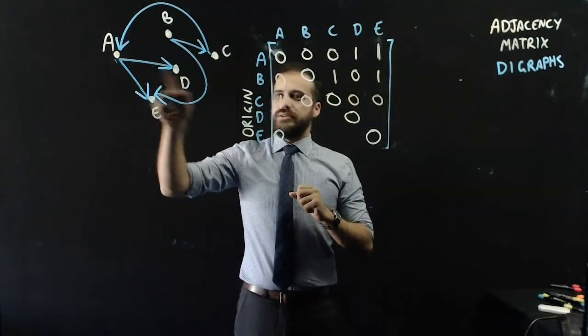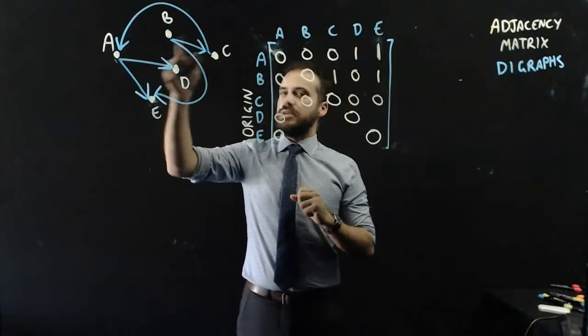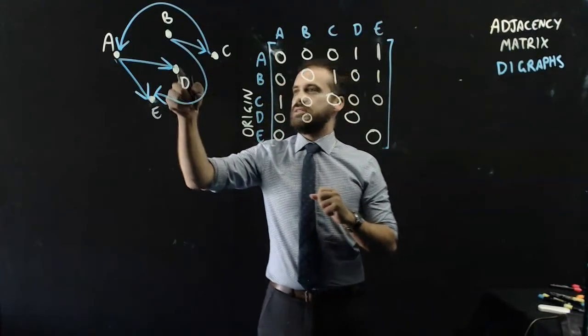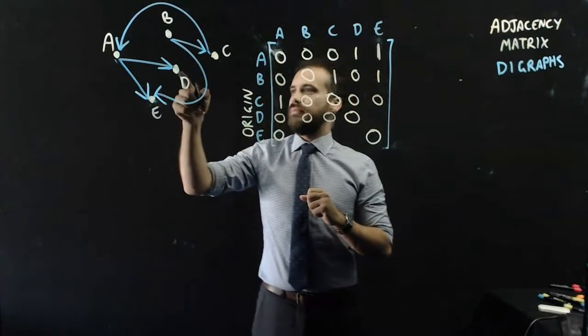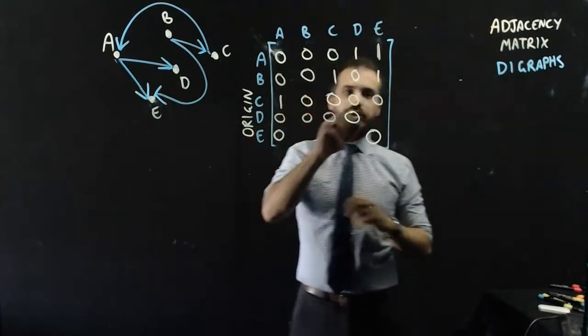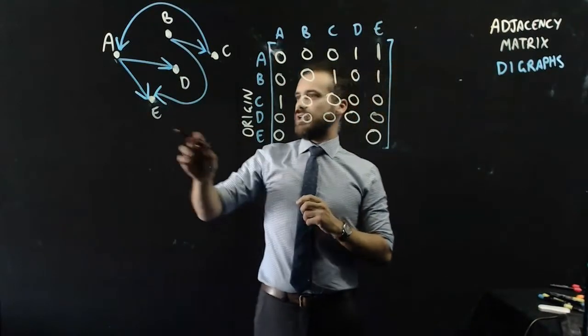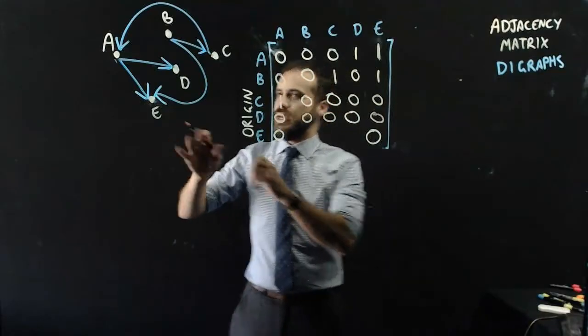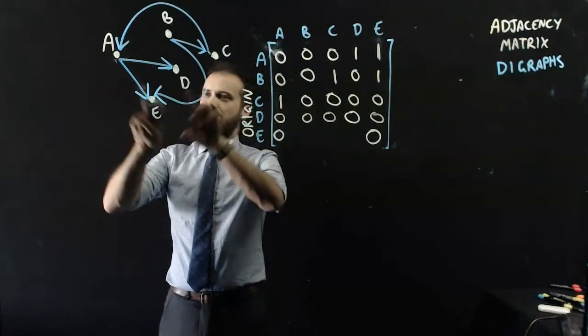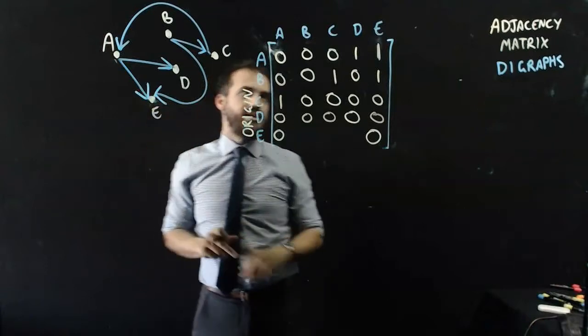D to A, no. D to B, no. D to C, no. D anywhere, no. And finally E to anywhere. No, there's no arrows leading out of E. There's only arrows leading into E. So it's zero, zero, zero.